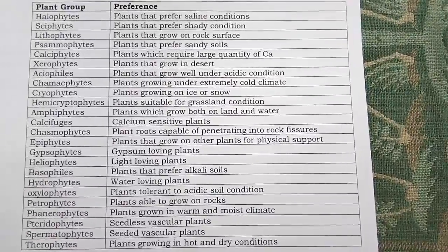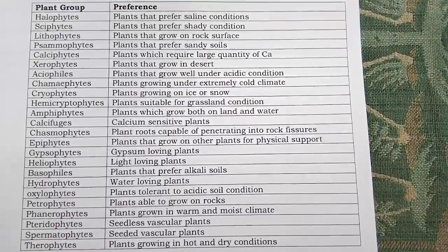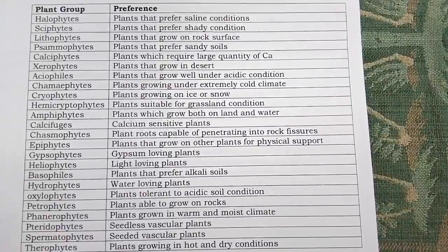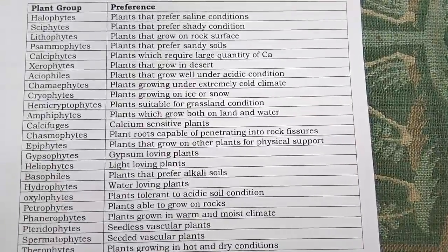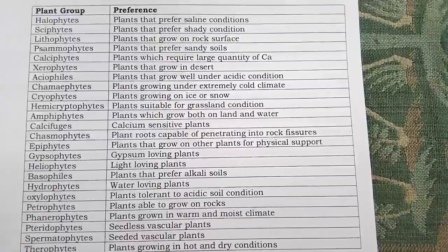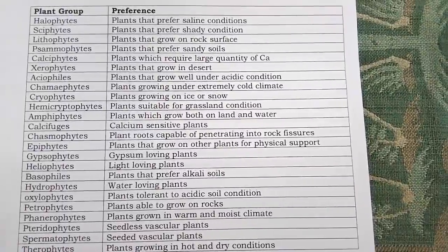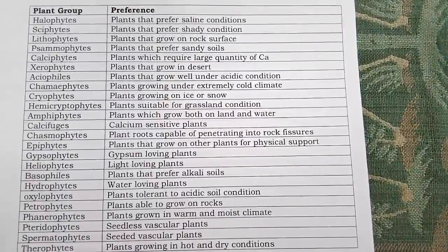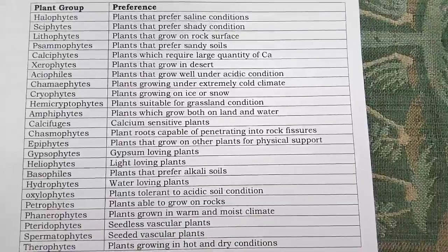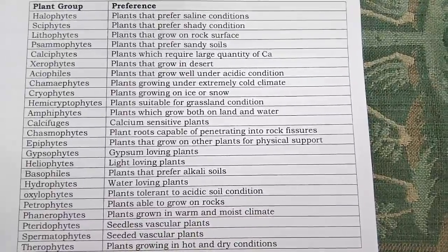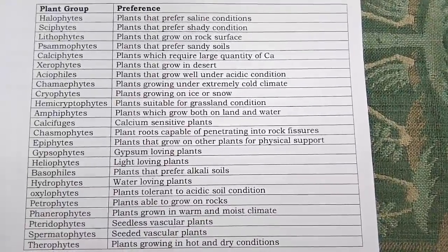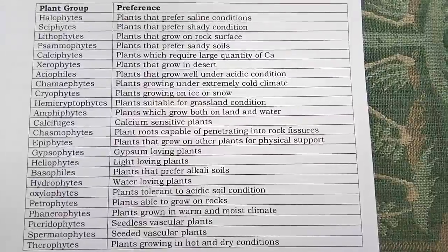Calcifuges are calcium-sensitive plants. Chasmophytes have roots capable of penetrating into rock fissures. Epiphytes are plants that grow on other plants for physical support. Gypsophytes are gypsum-loving plants. Heliophytes are light-loving plants. Basophiles prefer alkaline soils. Hydrophytes are water-loving plants.